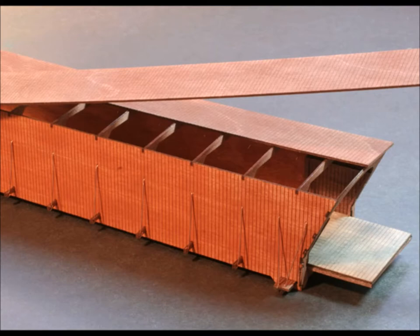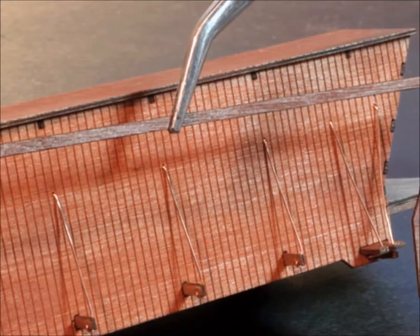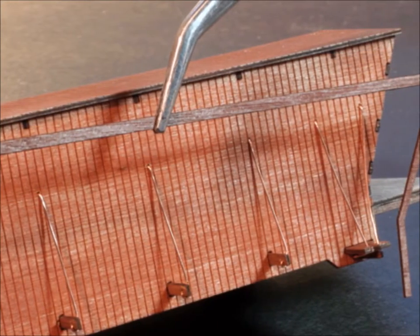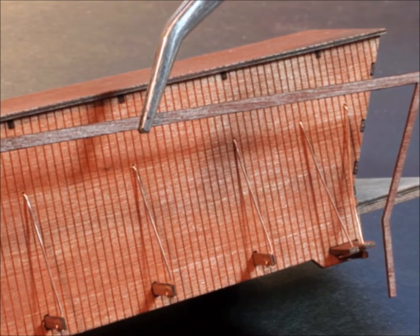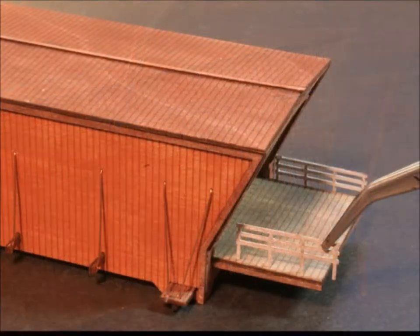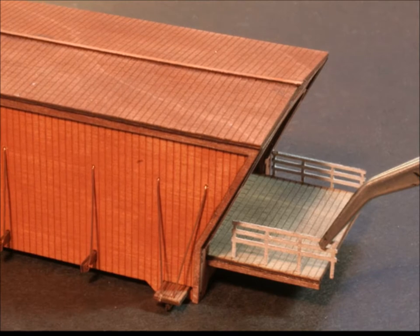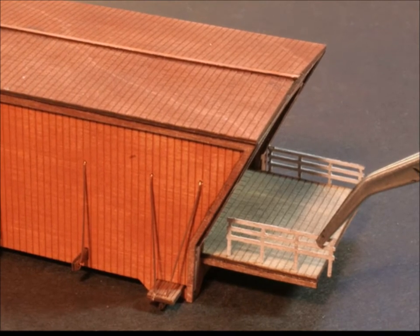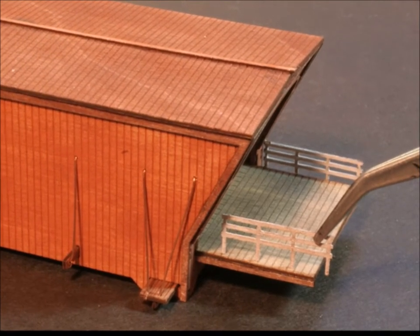Then one of the last things you got to do is put on the trim. The trim is not really too hard to put on, just make sure you have a minimum of glue on it. And then the last little tidbit is putting the railings on the extensions, and there you have it.